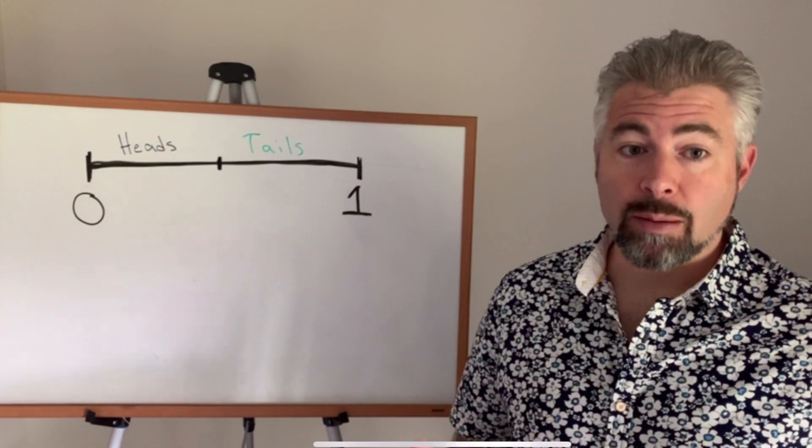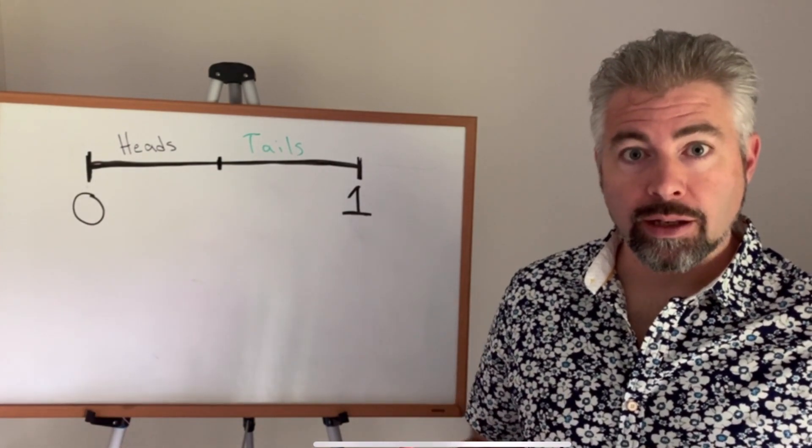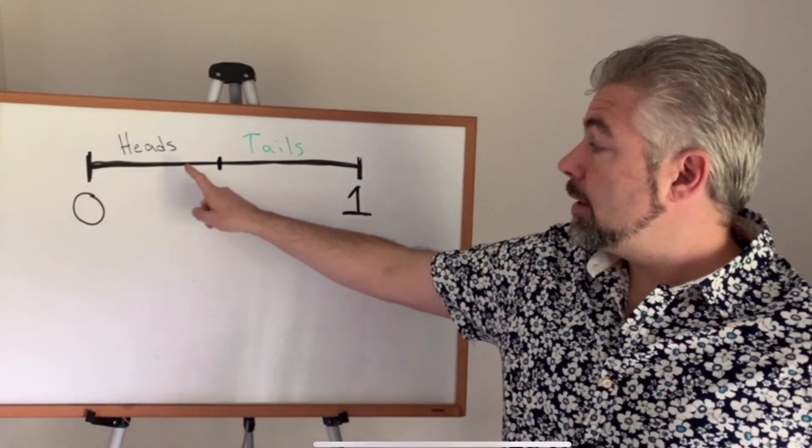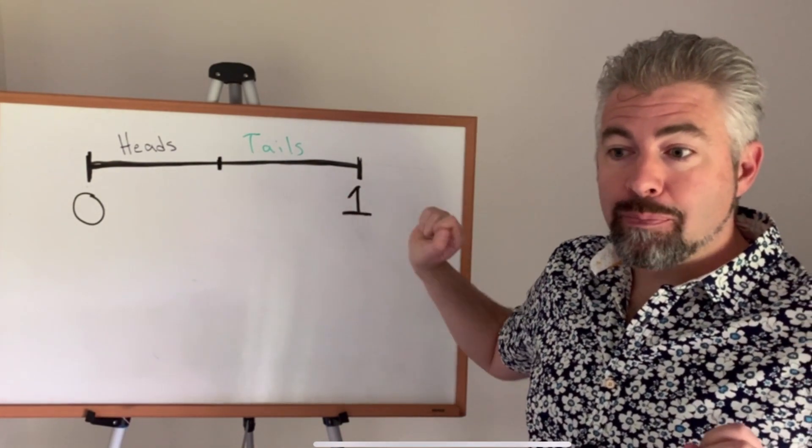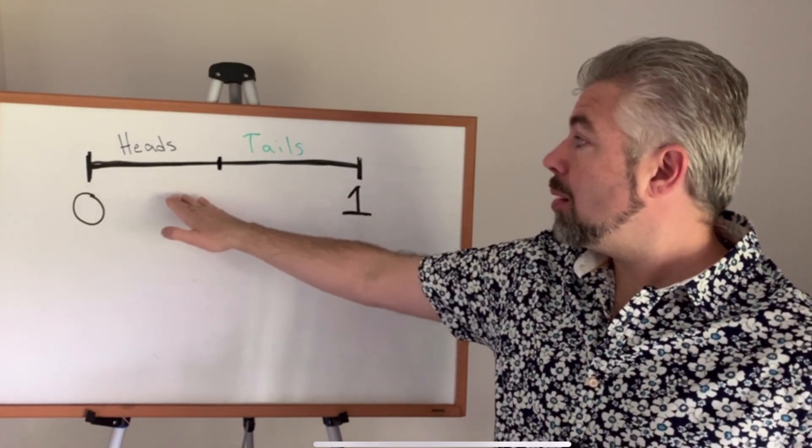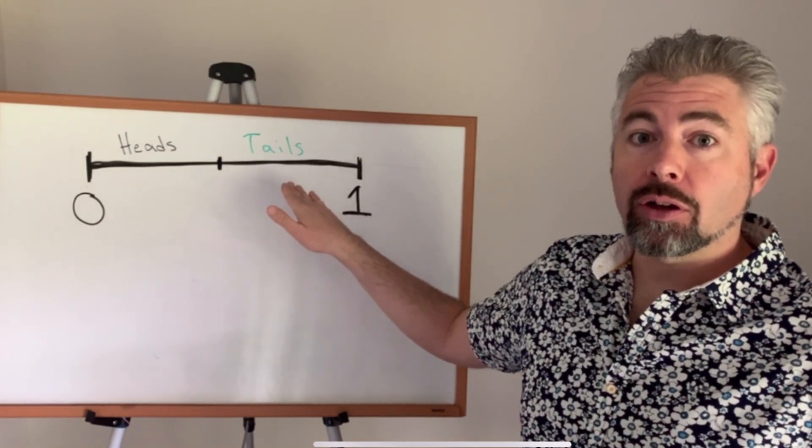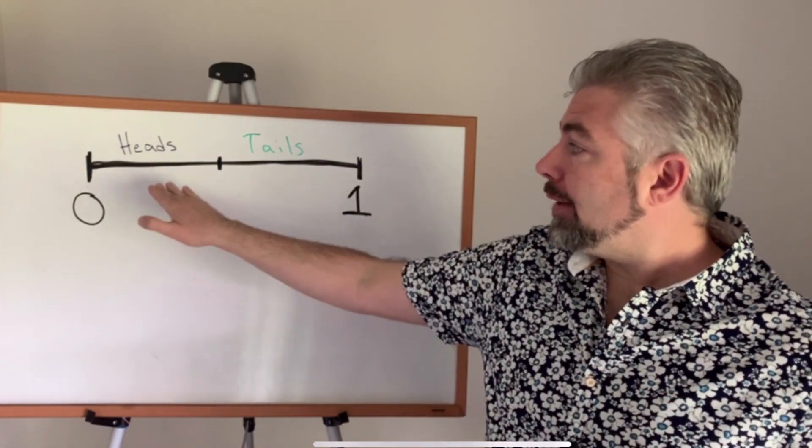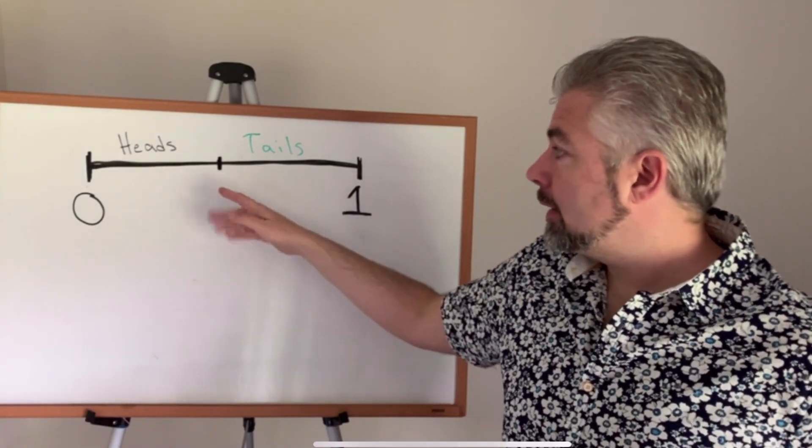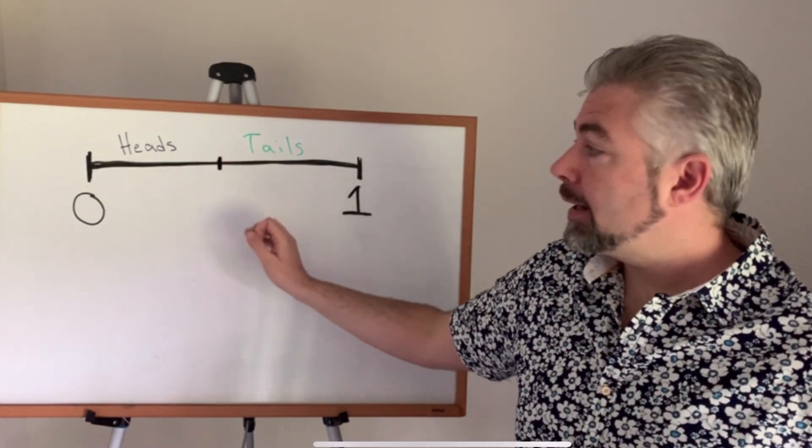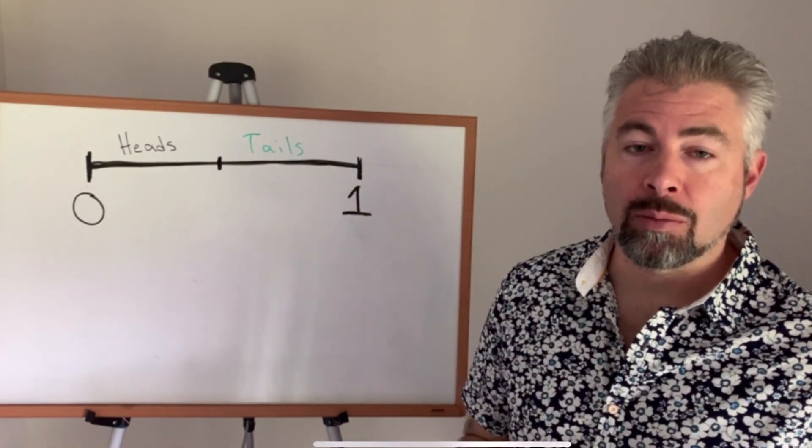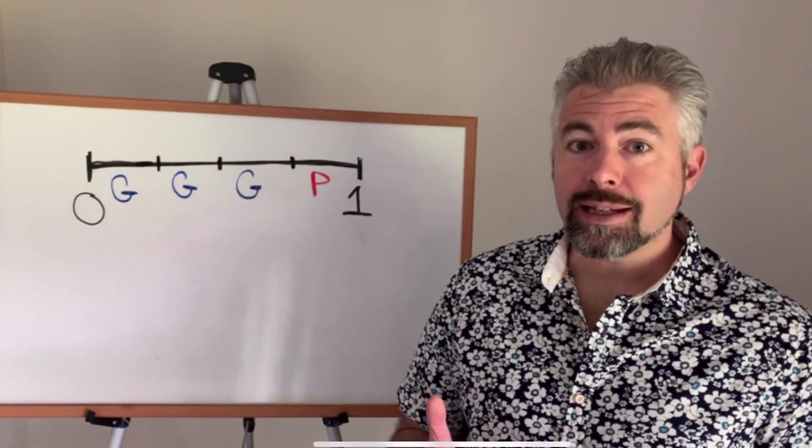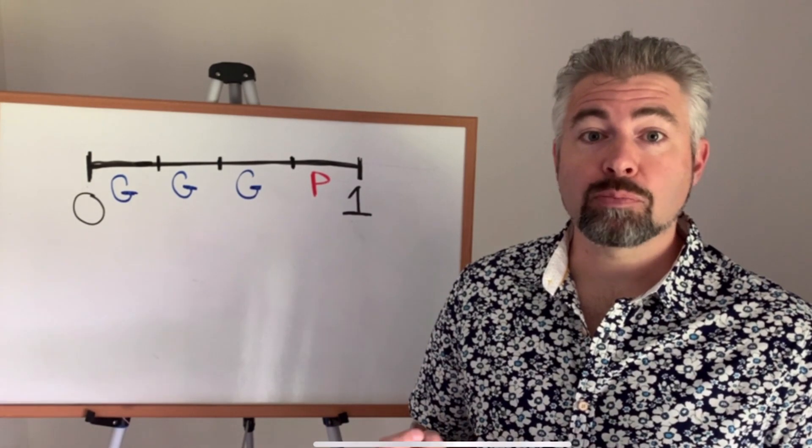A common example used to demonstrate probability is the flip of a coin. Here you can see the coin is either going to come up heads or it's going to come up tails, and there's about even chance that it will come up one way or the other. But since it has to either be heads or tails, we can split this line right down the middle and say half the time it'll come up heads and half the time it will come up tails. As you can see, the basic idea of probability is pretty simple.